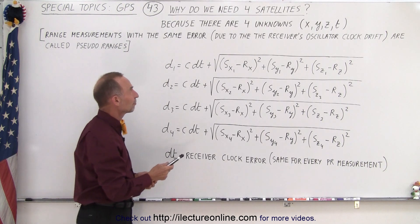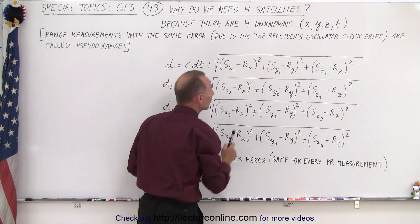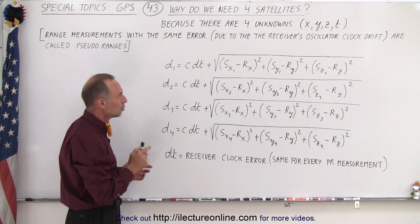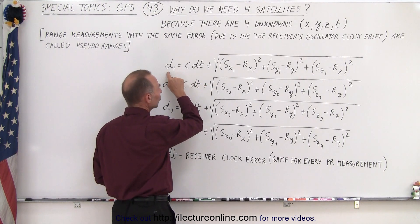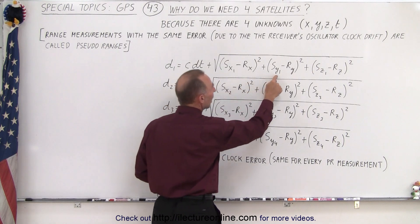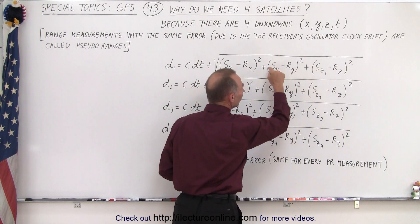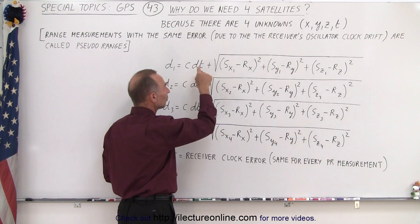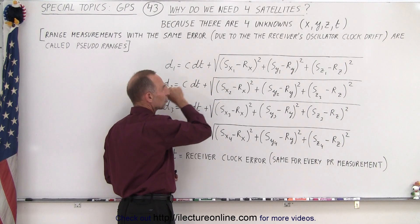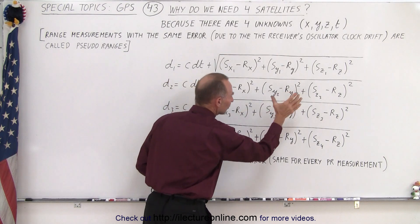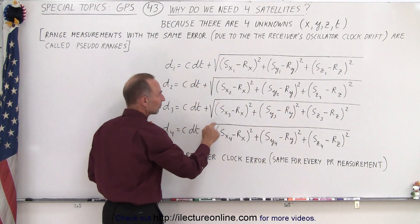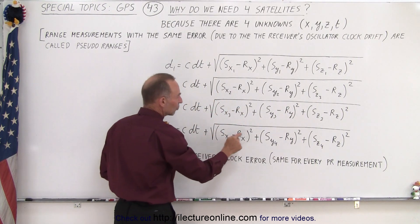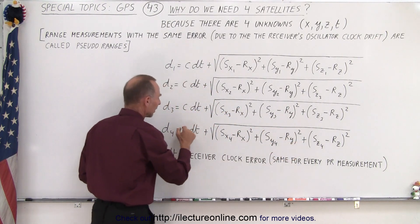We need to compensate for the receiver's oscillator clock drift. For the first measurement you have the X, Y, and Z positions of the satellite and the unknown clock drift. For the second measurement you have the X, Y, and Z of the second satellite and the clock drift. Similarly, you have the X, Y, and Z of the third satellite and the clock drift, and the X, Y, and Z of the fourth satellite and the clock drift.